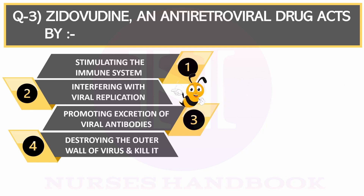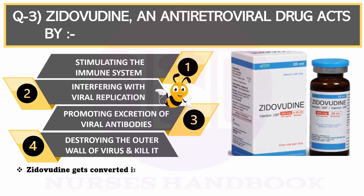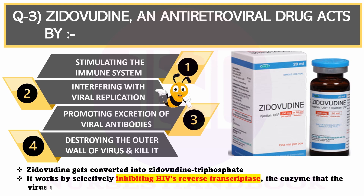The correct answer is interfering with viral replication. Zidovudine, when taken, is converted into Zidovudine triphosphate. This Zidovudine triphosphate inhibits HIV's reverse transcriptase, which is an important enzyme for the virus to make DNA copies.